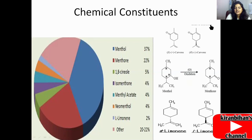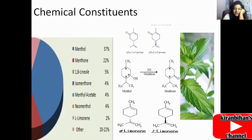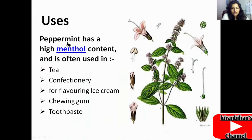You should draw these structures yourself and practice. The uses of Mentha piperita: peppermint has a high menthol content — 37% — and is often used in tea, confectionery, and also for flavoring ice cream, chewing gum, and toothpaste.